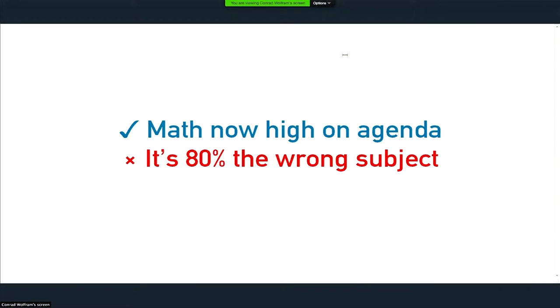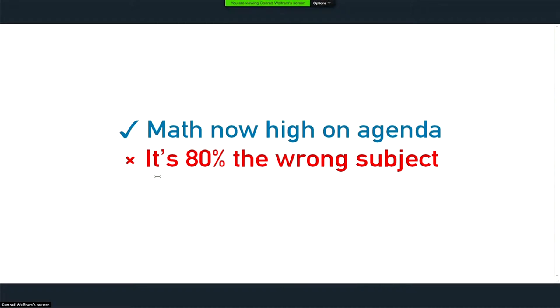Math is in a very peculiar place in the world because at one level, it's really high. And the good news, if you're into math and data science, is math is really high on the agenda in most countries as a major school thing that needs fixing. But somehow it's not doing the job it should be doing. The bad news is, in my view, that 80% of what's being taught around the world is the wrong subject.